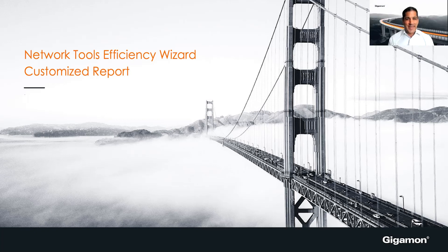Hi, this is Darshan Shah with Gigamon, and this is a short video about the Network Tools Efficiency Wizard Report. You can get this report in step three of the wizard, and if you haven't already, be sure to see the introductory video on the wizard. It's very easy to use. This report is customized based on the inputs that you enter.